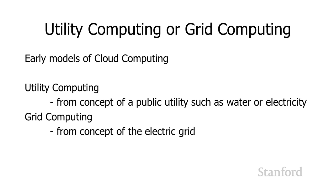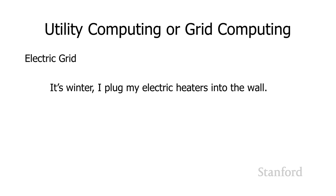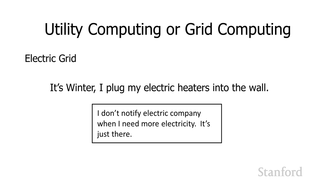Let's take the electric grid as our example. Suppose it's winter and it's starting to get cold. I have a bunch of electric heaters sitting around my house, and when it starts getting cold, I plug them into the wall and crank them up. I don't notify the electric company when I need more electricity — the electric company just has a whole bunch of electricity there. I just plug my heaters into the wall and start using them. I don't call the electric company ahead of time and say, hey, it's starting to get cold, I think starting next Thursday I'm going to need some more electricity.